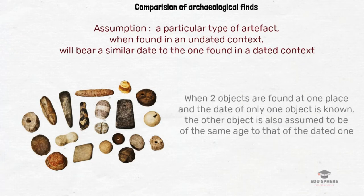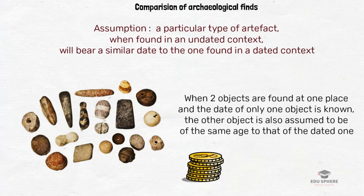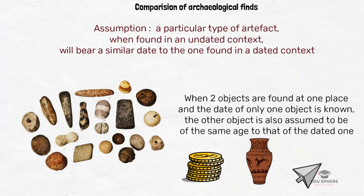This enables the whole undated context to be given a chronological value. When two objects are found at one place where the date of only one object is known, the other object is also assumed to be of the same age. The greater the similarity, the closer the ages. Certain artifacts like coins, pottery, and arrowheads, which have limited occurrence in a given culture, provide the best examples for cross dating.